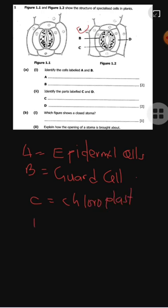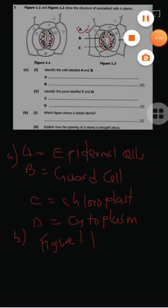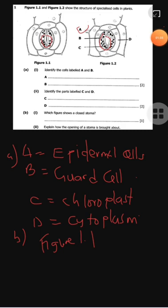Part A and B asks which figure shows closed stoma. You can see by the difference in the opening that figure 1.1 is what is closed. Now, explain how the opening of the stoma is brought about.